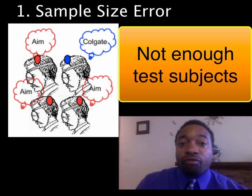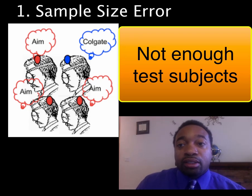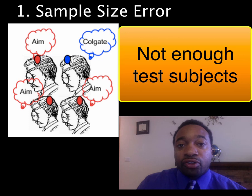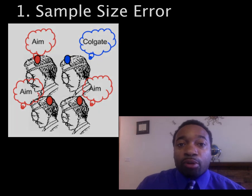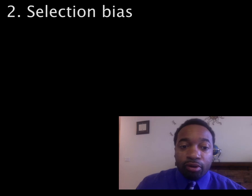If we have a large sample size, we have some level of confidence in our experiment. Now let's talk about our second error: selection bias.